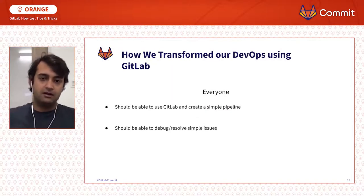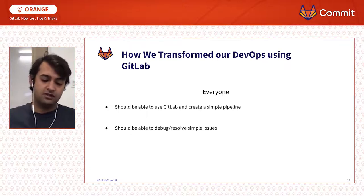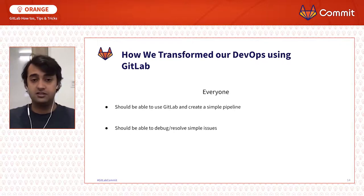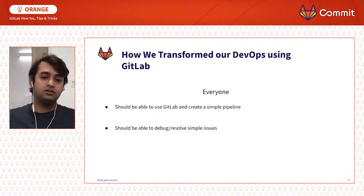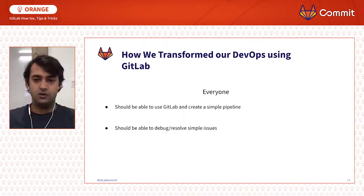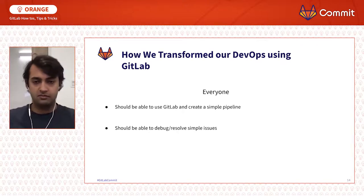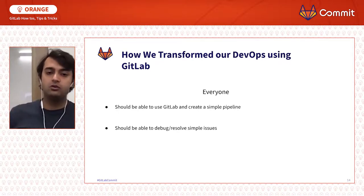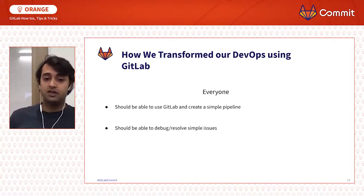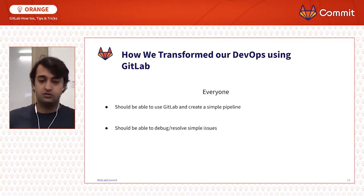These are a couple of reasons I transformed my previous companies and my current agency using DevOps. Rule number one: everyone should be able to use GitLab and create a simple pipeline — whether you're a UI/UX designer with some programming background, a product manager, or a front-end developer. Rule number two: everyone should be able to debug and resolve simple issues as well. If you create a simple pipeline, you should be able to resolve issues within it.